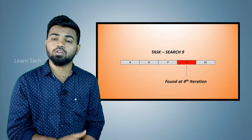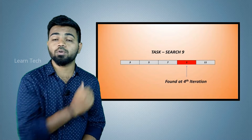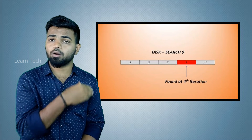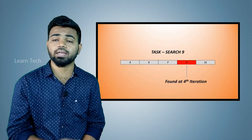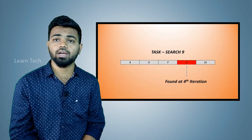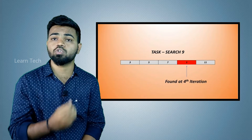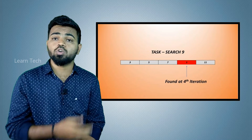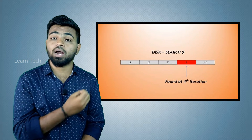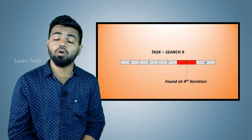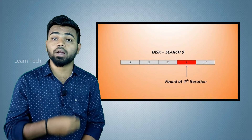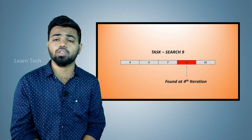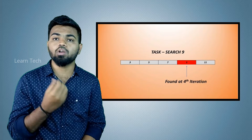That is what linear search does. First, we check the number 3 — not 9. Then we check 5 — not 9. Then we check 7 — not 9. Then we check 9 — yes, 9 matches! But we have 5 numbers and it took 4 comparisons. If we use a better algorithm, we can do this more efficiently.